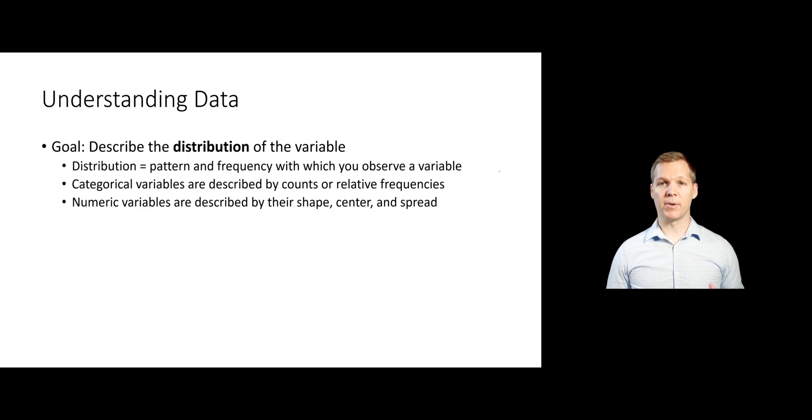Remember that our overall goal in this module is to summarize data. What we mean by that is can we describe the distribution of the data? And that differs depending on whether we have categorical variables or numeric variables. If we have categorical variables, we're trying to describe the counts or relative frequencies with which each category occurs. When we have numeric variables, we're trying to describe the distribution via the shape, center, and spread.